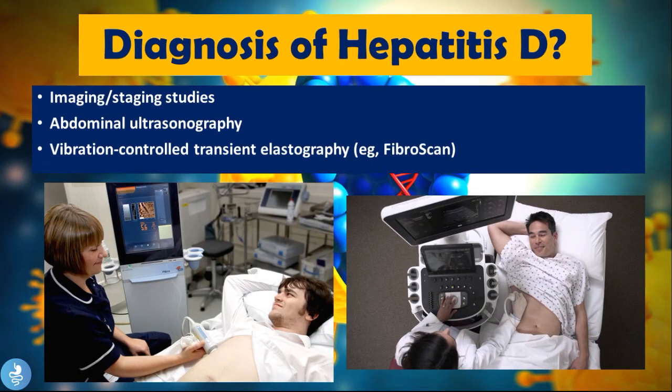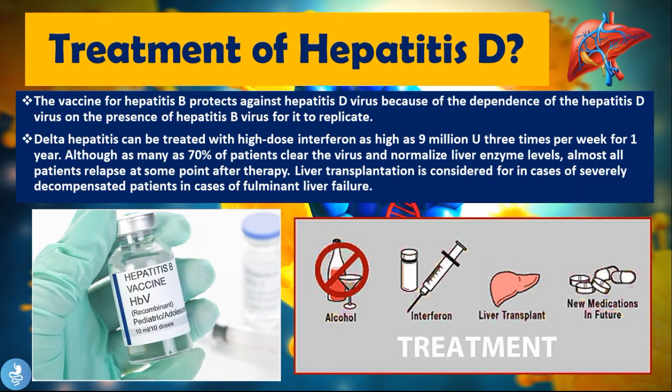Imaging and staging studies can also be used to diagnose hepatitis. This is usually done via abdominal ultrasound or vibration-controlled transient elastography such as FibroScan and FibroMax, which assess liver damage and degree of fibrosis, and are an easy way to check for the development of hepatocellular carcinomas.